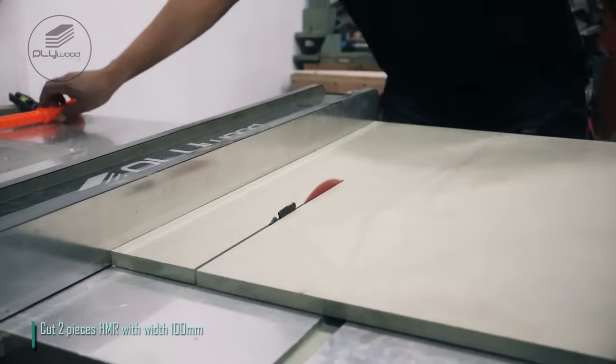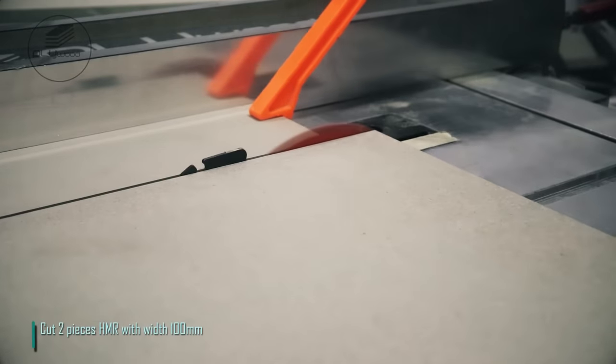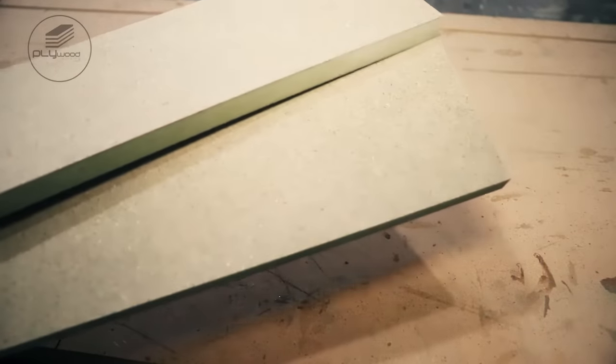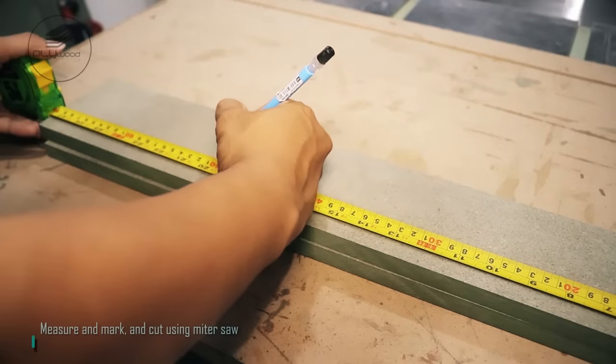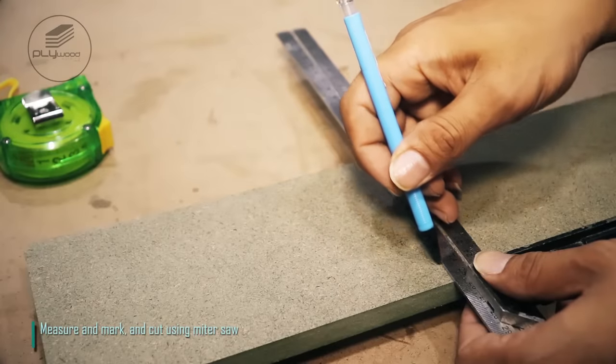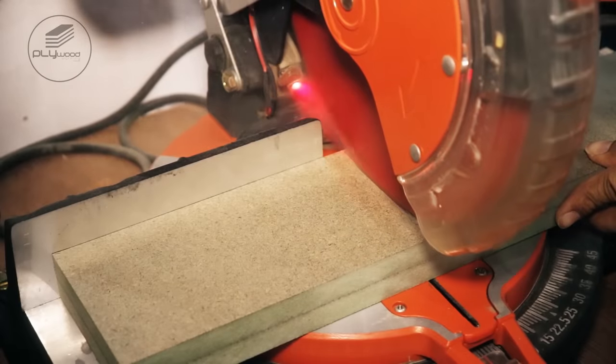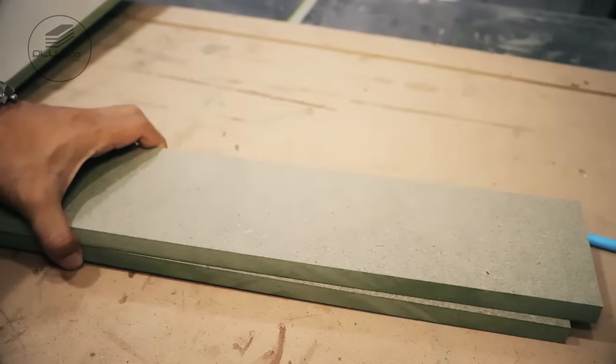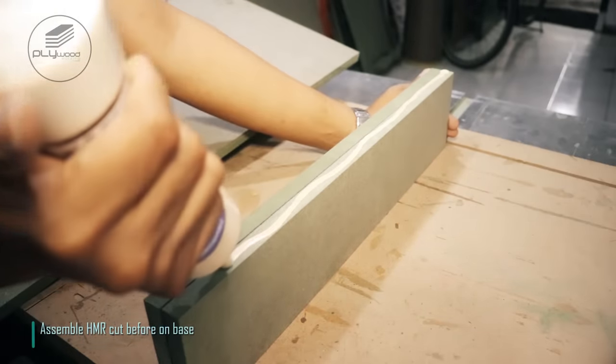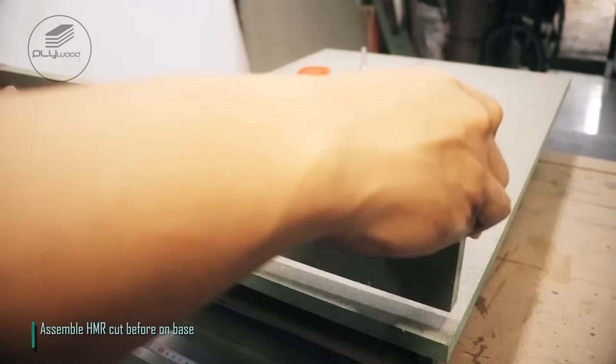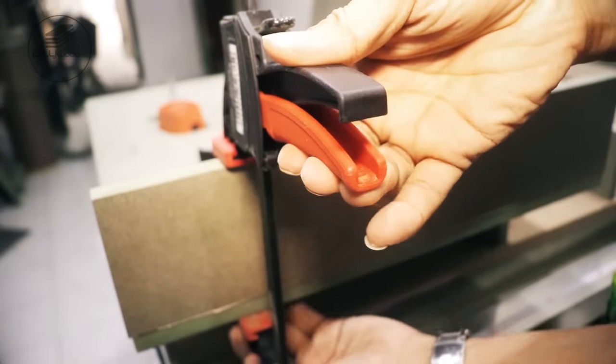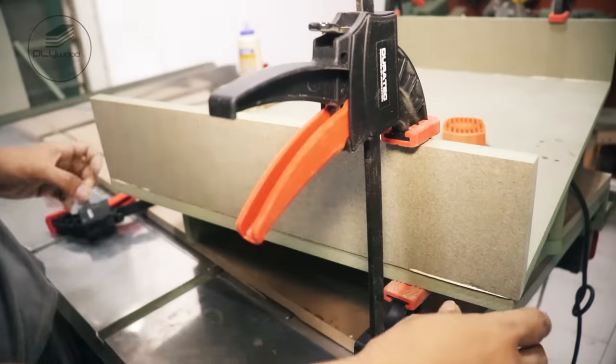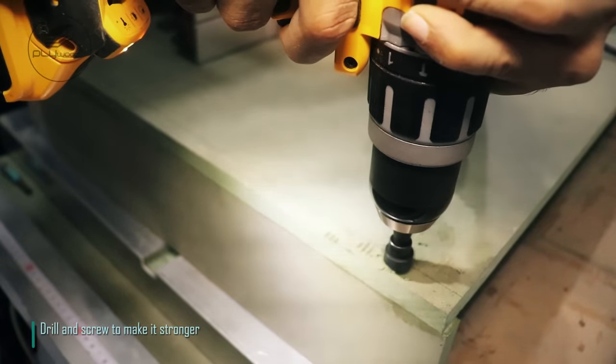Cut two pieces HMR with width 100 mm. Measure and mark and cut using miter saw. Assemble HMR cut before on base. Drill and screw to make it stronger.